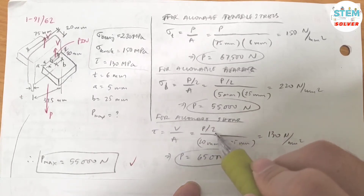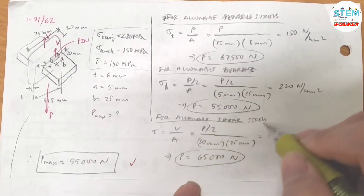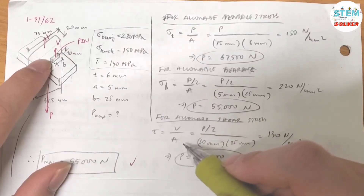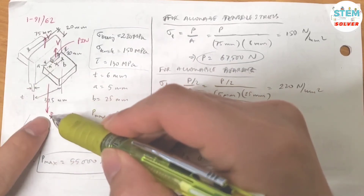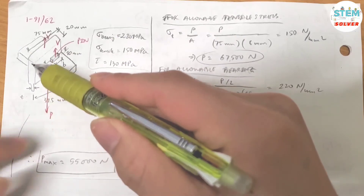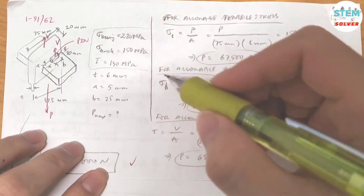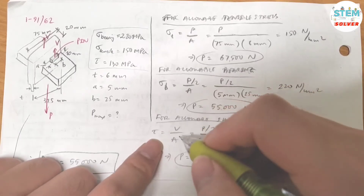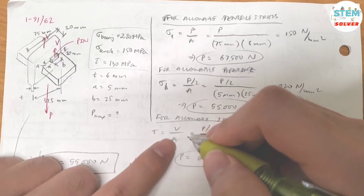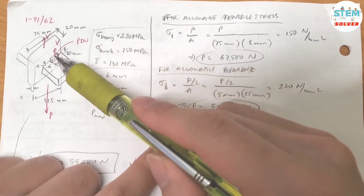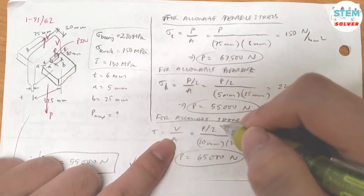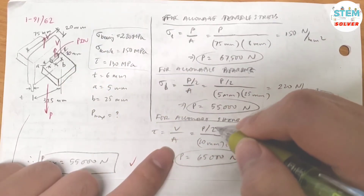Now for the allowable shear stress: shear force is parallel to the plane. The force P pulling down means the shear force is parallel to this plane, which is parallel to this blade. The formula is: shear stress equals shear force divided by area. Again, you have two shear planes — one on each side — so divide by 2.